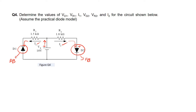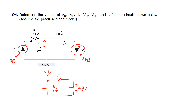Now since we know that the status of D1 and D2 are reverse biased and forward biased respectively, we have to redraw the circuit to its equivalent circuit in order to find the six parameters. D2 is forward biased, hence it's replaced by a voltage source of 0.7 volts. When it comes to diode D1, because it's reverse biased, it's replaced by an open switch.